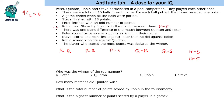There was a one-point difference in the match between Quinton and Peter, so the scores are 7 and 8 — either 7-8 or 8-7. Peter scored twice as many points as Robin in their game, which gives a 10-5 score line, with Peter scoring 10.